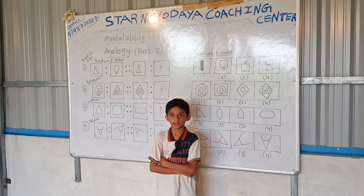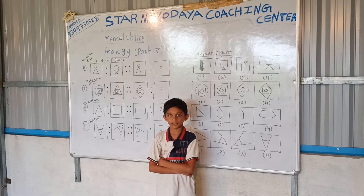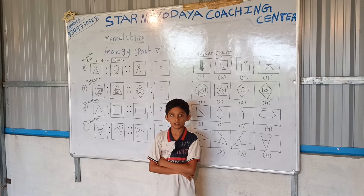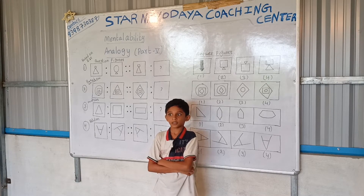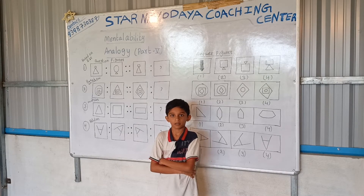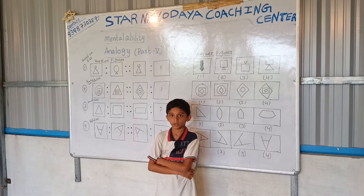Three Digit Smallest Number. Four Digit Greatest Number. Five Digit Smallest Number. Six Digit Greatest Number.